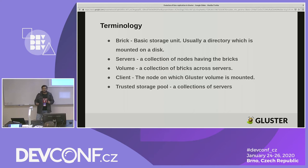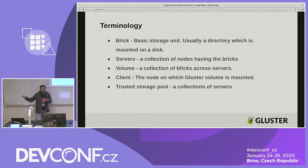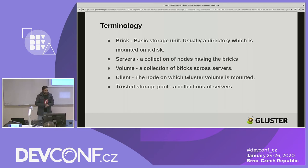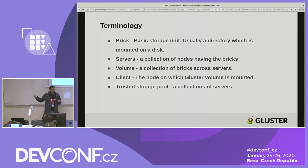The terminologies you should be aware of during this presentation are: what is a brick, what is a server, and so on. A brick is basically your hard disk being mounted somewhere on a machine — that mount directory is called a brick. It runs as a separate process on the particular node. A server is the node where your bricks reside. A server can have a single brick or multiple bricks. A volume is a collection of these bricks across various nodes.